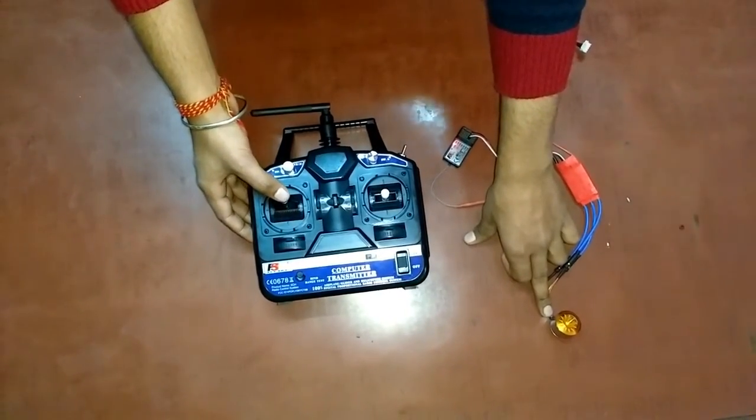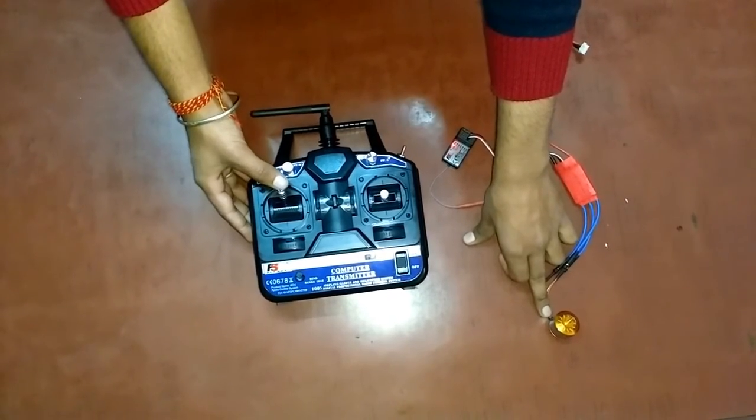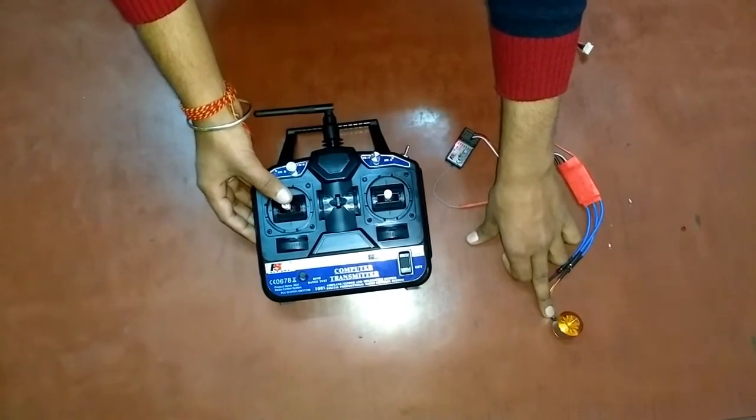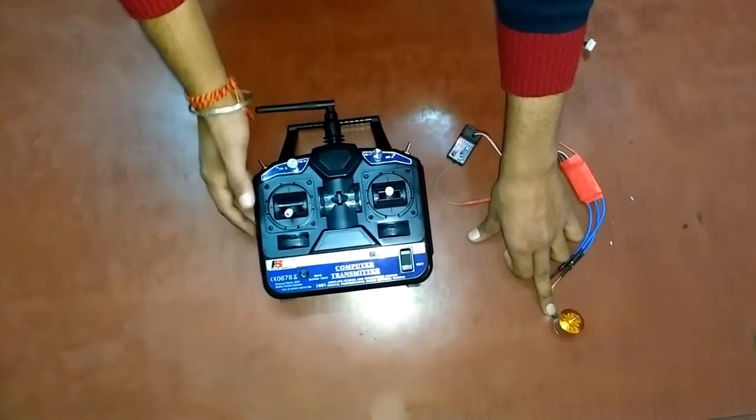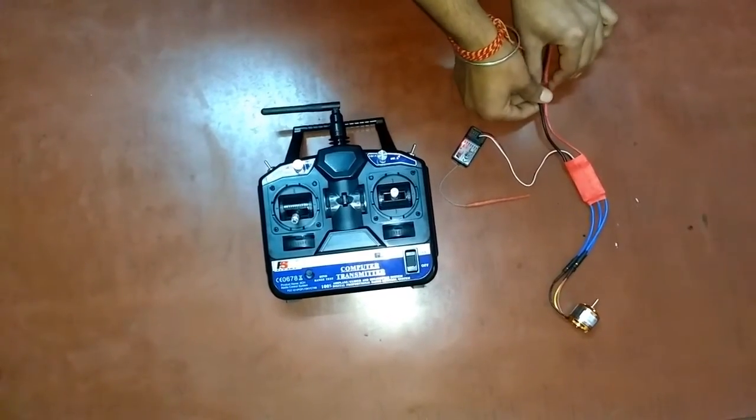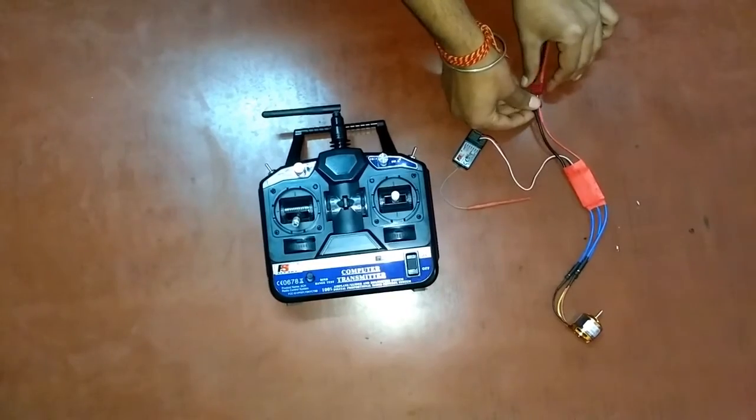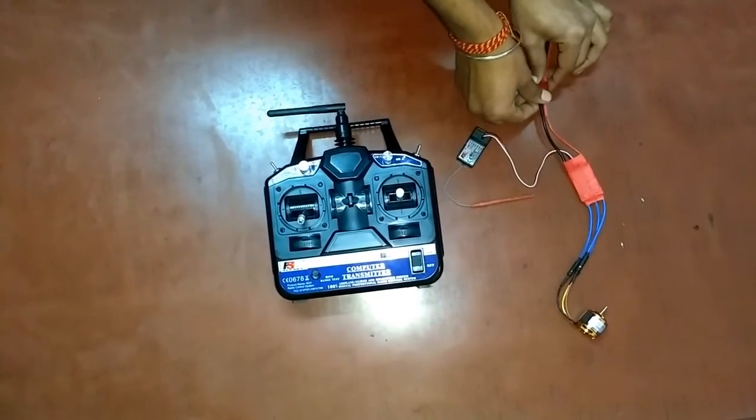And if you now increase the throttle, you will see that your motor will run instantly. This ensures that your ESCs are calibrated. And now remove the battery and then again plug it in the ESC and you will get the same result.